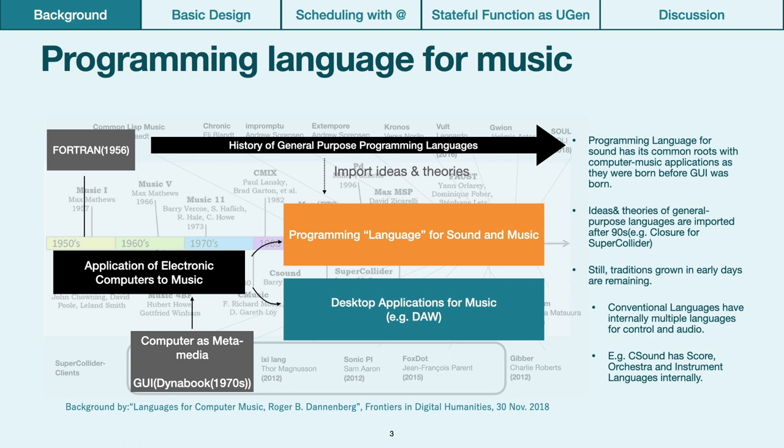Similarly, Cycling74 Max has Max, MSP, and recently Gen tilde.